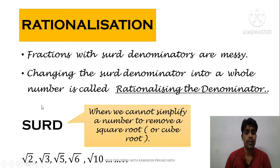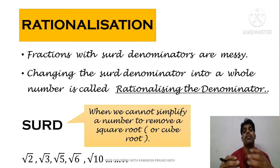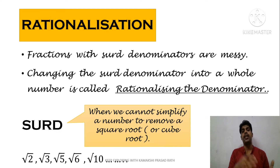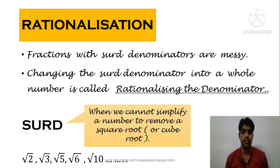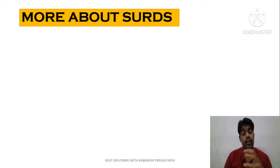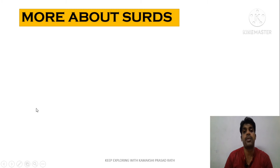So we will be changing these surd denominators into whole numbers. We have to convert these surds into whole numbers so that our calculation becomes easy. When the denominator is a whole number, the calculation will become easy. For that, we should know more about surds so that we can simplify.